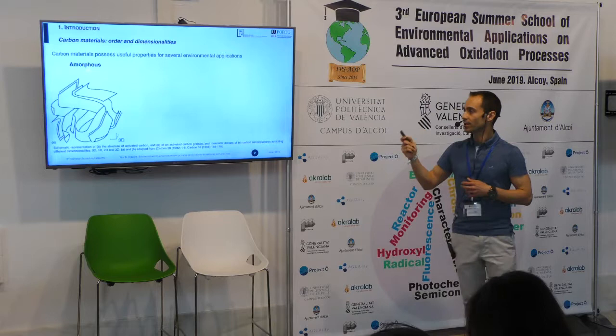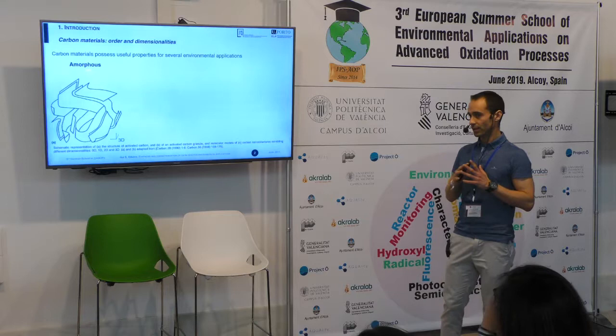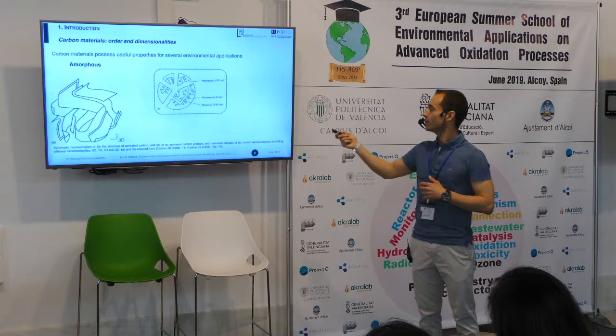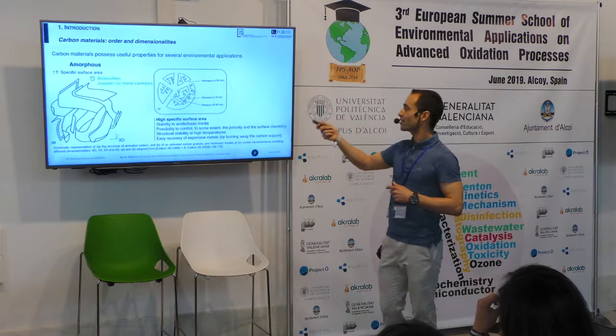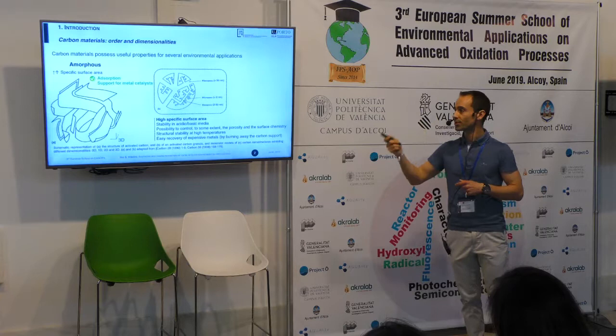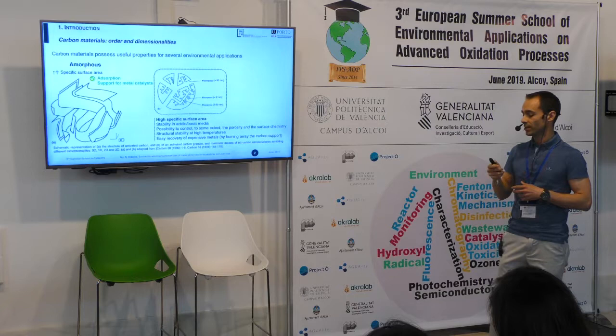This is a typical representation of activated carbon structure. The random bonding of the carbon layers creates empty space, which are called porosity, mainly micropores and mesopores. Even in this very disordered structure, this porosity is responsible for the high specific surface area these materials usually possess.